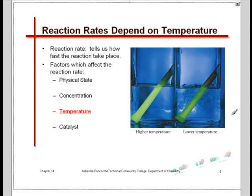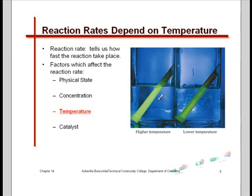Here's a very simple experiment: take glow sticks — one in warm water, one in ice. You can clearly see a visual change. There's a decrease in the rate of the reaction in the cold one. The concentrations haven't changed inside those two sticks — they're essentially equivalent. The only thing changing is the temperature. So there's a relationship between temperature and the rate constant.